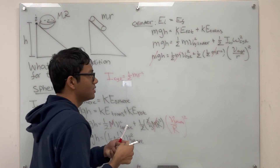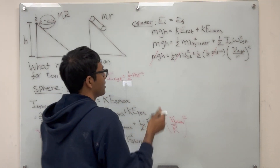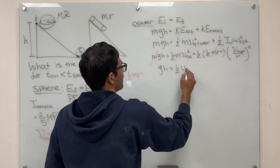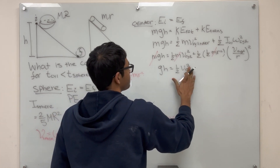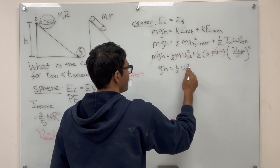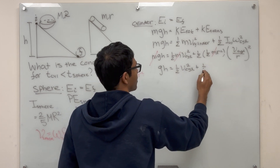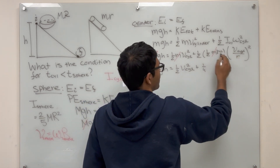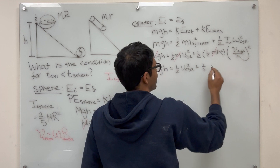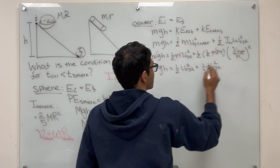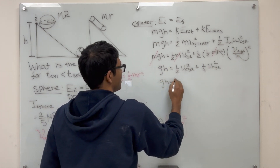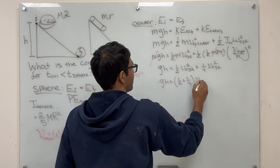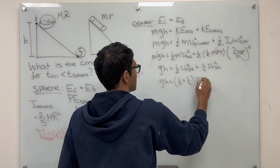This leads to gh equals one half v cylinder squared plus one fourth v cylinder squared, which gives us three fourths v cylinder squared. So the velocity of the cylinder at the bottom is the square root of four thirds gh.